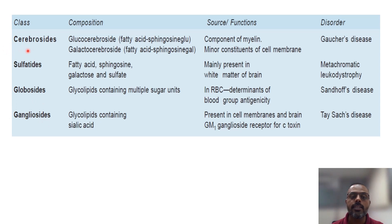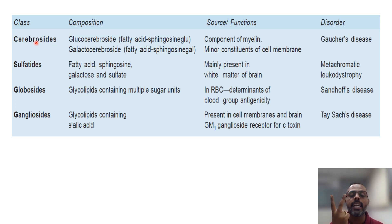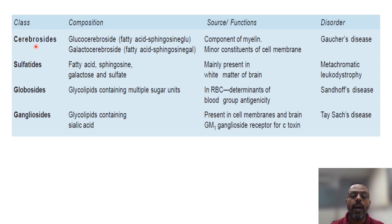The first one is the cerebroside and there are two types of cerebroside. The first one is the glucocerebroside if there is a presence of glucose as a carbohydrate, and the second one is the galactocerebroside if there is a presence of galactose as a carbohydrate. This cerebroside is mainly present in the white matter of the brain.